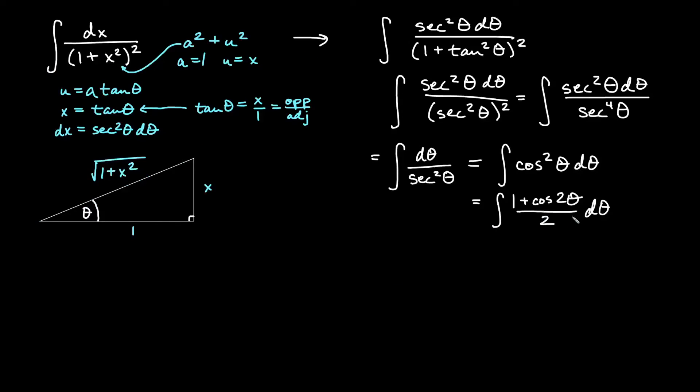Okay, we'll go ahead and bump the over 2 out, make that 1/2. So that would be 1/2 the antiderivative of (1 + cos 2θ) dθ. And then if we integrate, we have 1/2 times the antiderivative of 1 dθ is just θ, and the antiderivative of cos 2θ will get a half come out, the reciprocal of 2, sine of 2θ plus c.